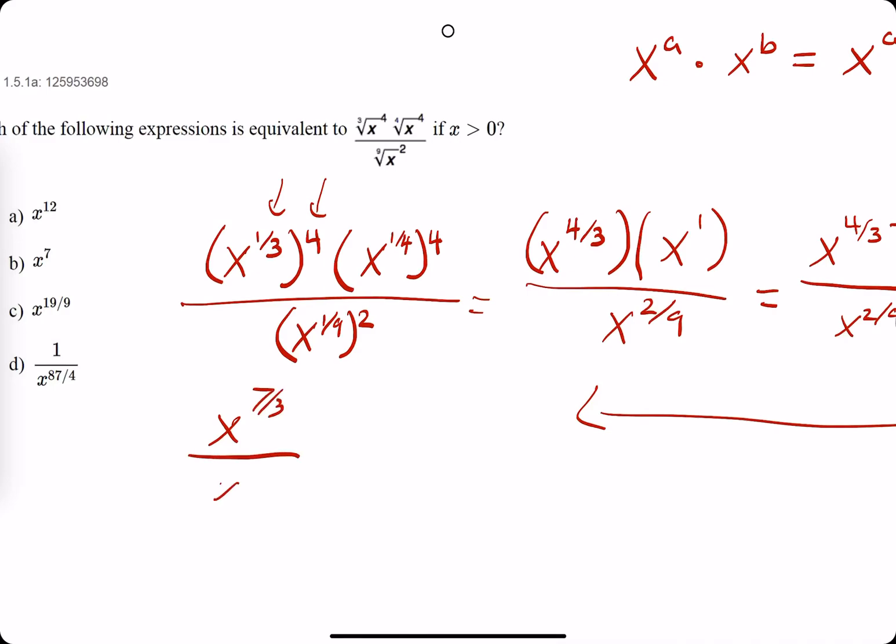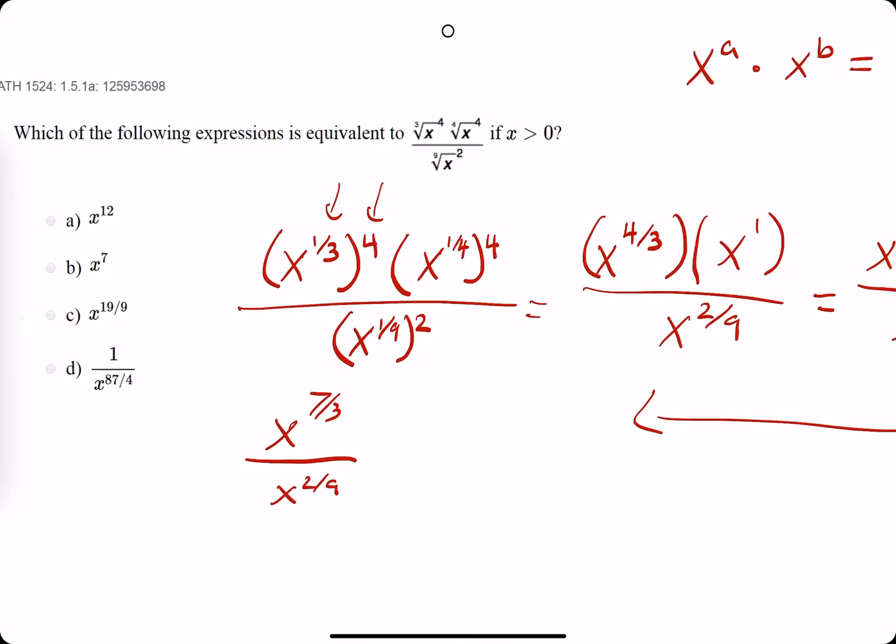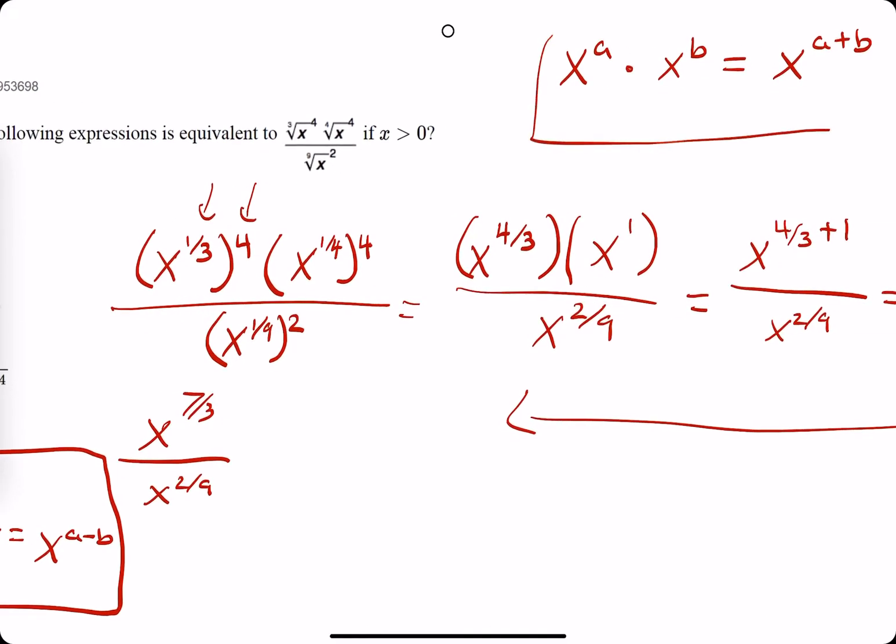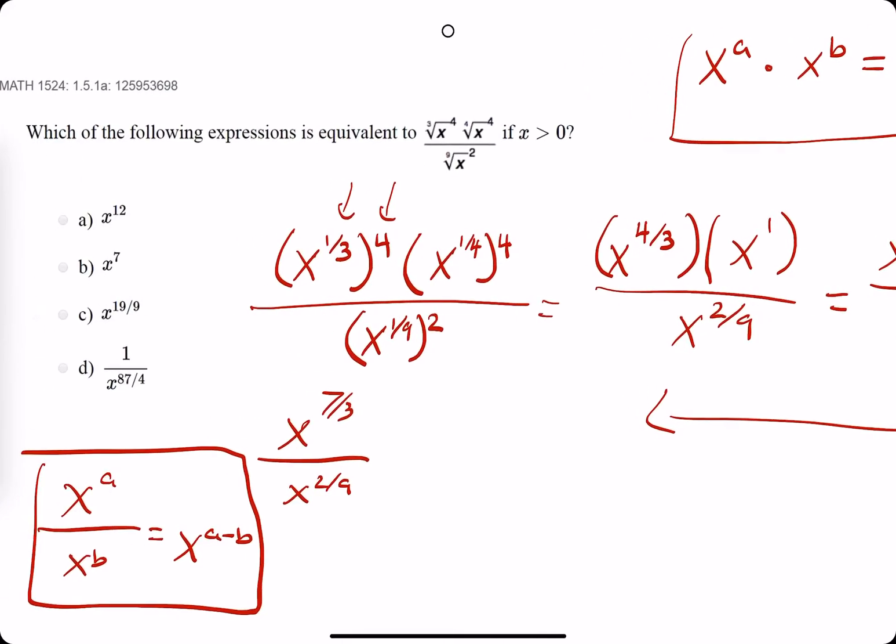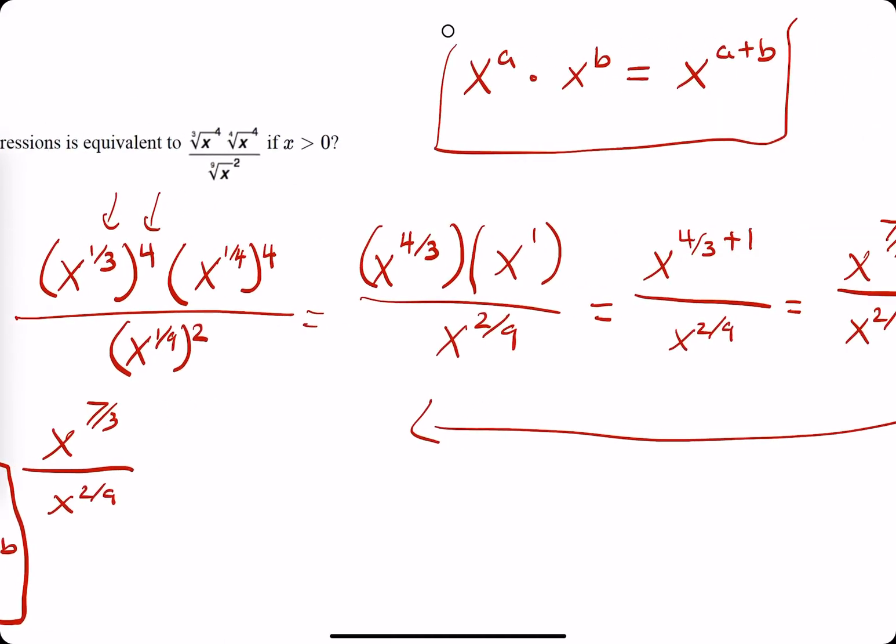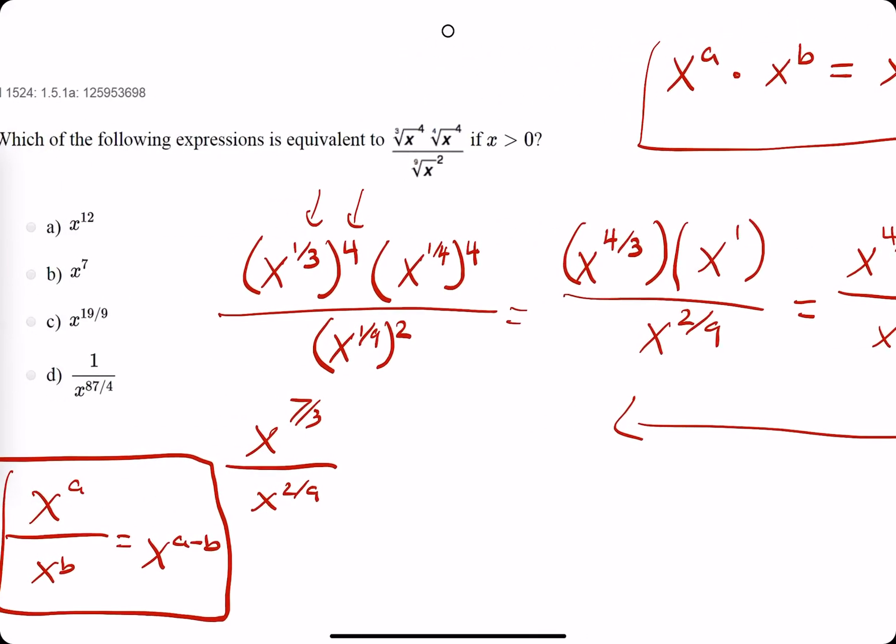So now, when we have x to the a over x to the b, what we do is x to the a minus b. So that's a big rule. So we have our division and subtraction rule, and then we have our multiplication and addition rule.